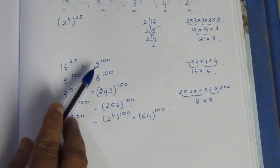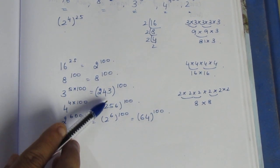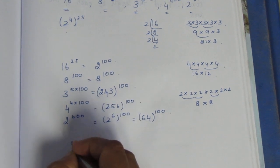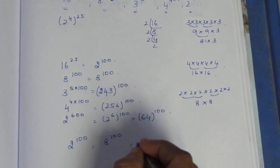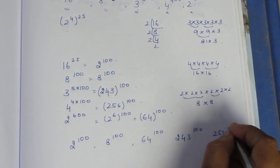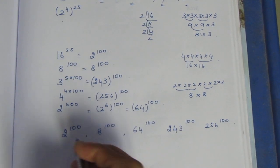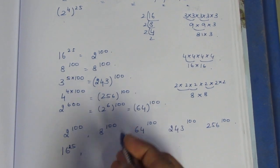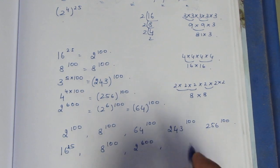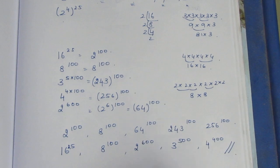Now let's order from small to big — least to greatest. Comparing the bases when all are raised to power 100: 2, 8, 64, 243, 256. So in order: 2 power 100, 8 power 100, 64 power 100, 243 power 100, 256 power 100. Converting back to the original expressions: 16 power 25, 8 power 100, 2 power 600, 3 power 500, 4 power 400. This is the final answer.